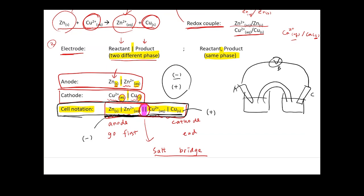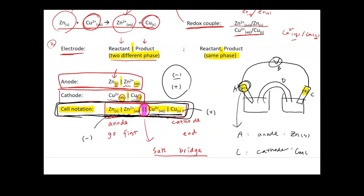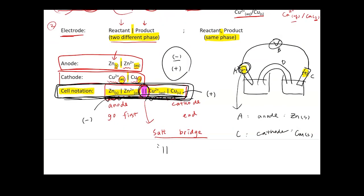In homework or exams, you may be shown a cell notation and asked to identify components. For example, given the cell notation, you should identify which component is the anode (negative sign) and which is the cathode (positive sign). The first component in the notation is always the anode and the last is the cathode, with the salt bridge represented in between by the double line.